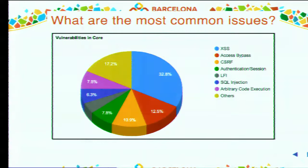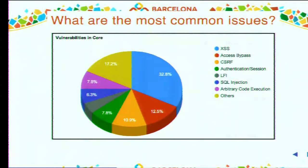Now talking about the specific vulnerabilities we see in Drupal core and contrib. This is a graph of vulnerabilities in core from 2014. As you can see, the most common one is XSS — cross-site scripting — which involves people using JavaScript to exploit something. We also have a variety of others: access bypass, cross-site request forgery, authentication and session issues, SQL injection. But cross-site scripting remains dominant because we are a content management system dealing heavily with user-provided input, so everything we output to HTML must not contain script tags.